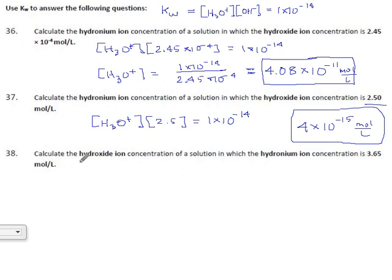And if they ask about hydroxide and give hydronium, nothing really changes. It's just, the H3O is 3.65, that goes here. OH, don't know it. And the ion product is 1 times 10 to the minus 14.